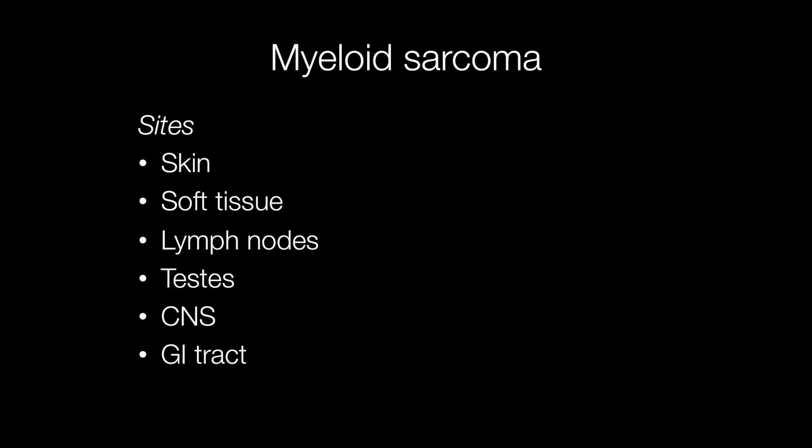Sites where these tumours occur include the skin, soft tissues, lymph nodes, testes, CNS, gastrointestinal and genitourinary tract, and bone. When myeloid sarcomas arise in children, these tend to be located in either the skin or ocular regions.